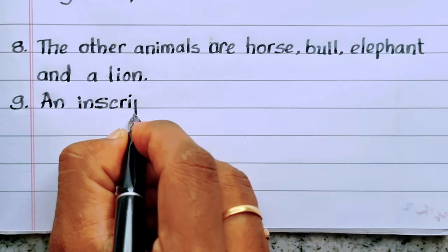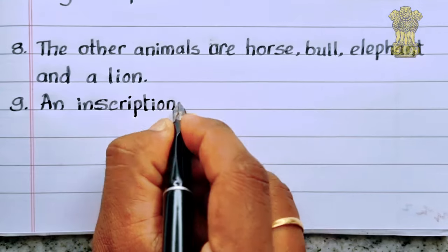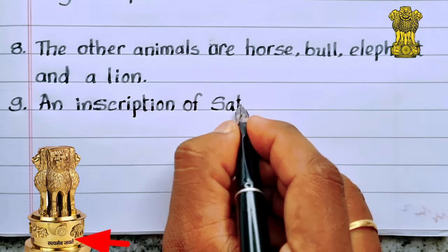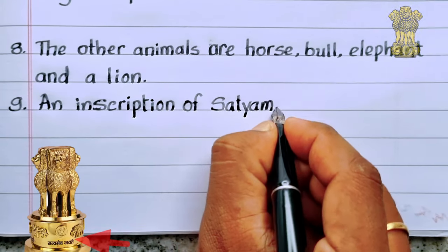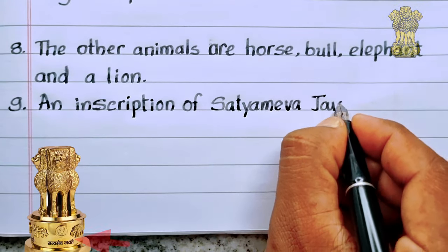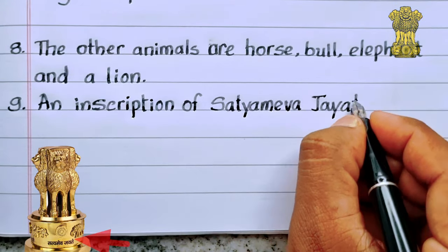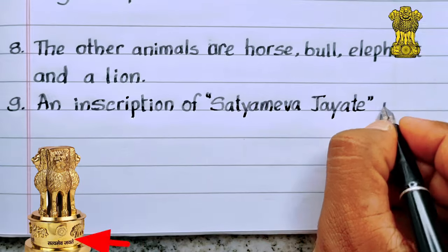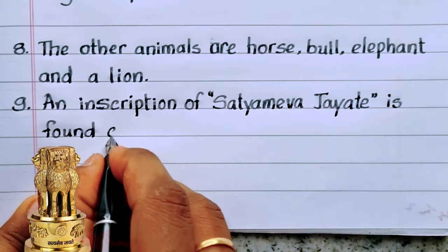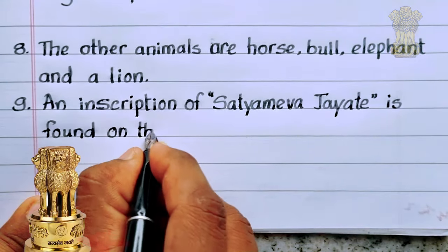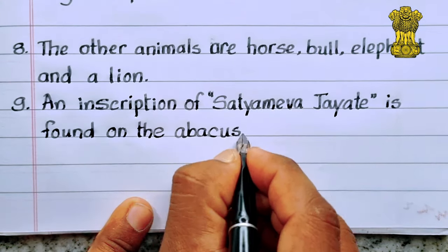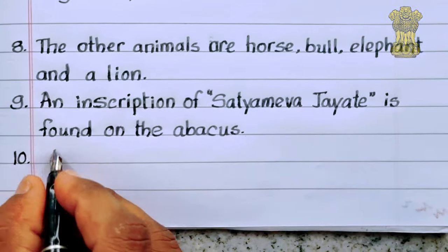Ninth point: an inscription of Satyameva Jayate is found on the abacus.